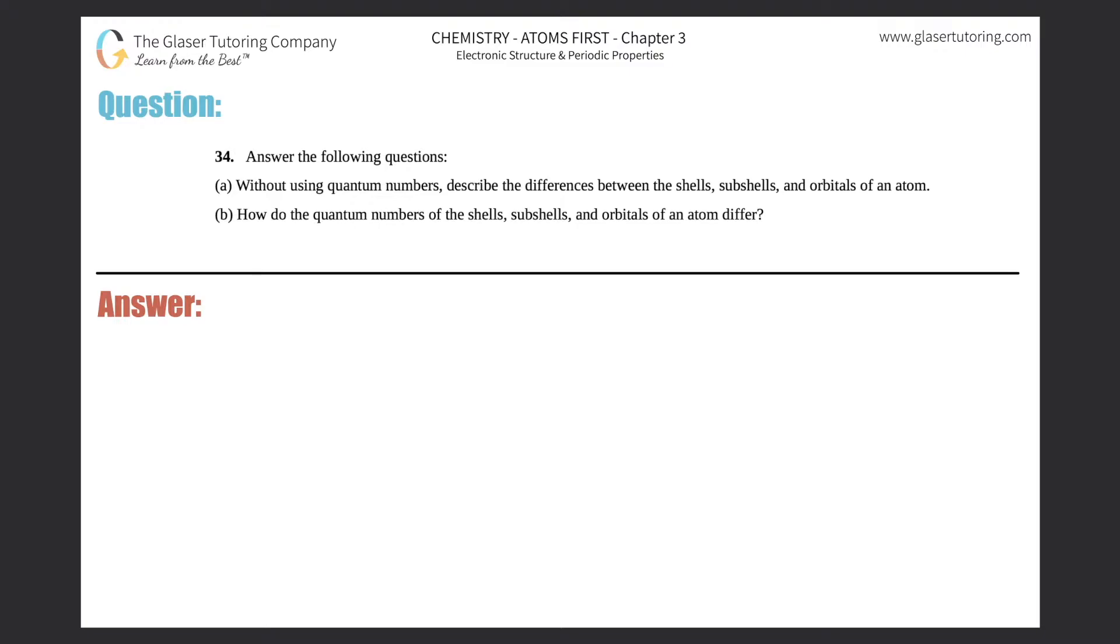Number 34, answer the following questions. Without using quantum numbers, describe the differences between the shells, subshells, and orbitals of an atom. All right, so they just want to talk about what's the difference between a shell, a subshell, and an orbital.